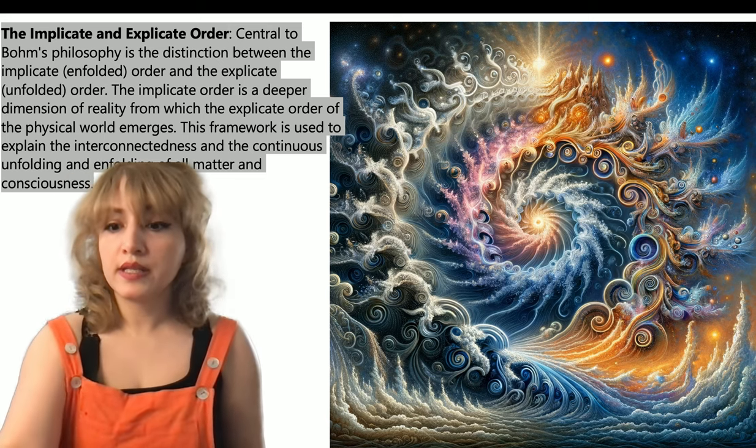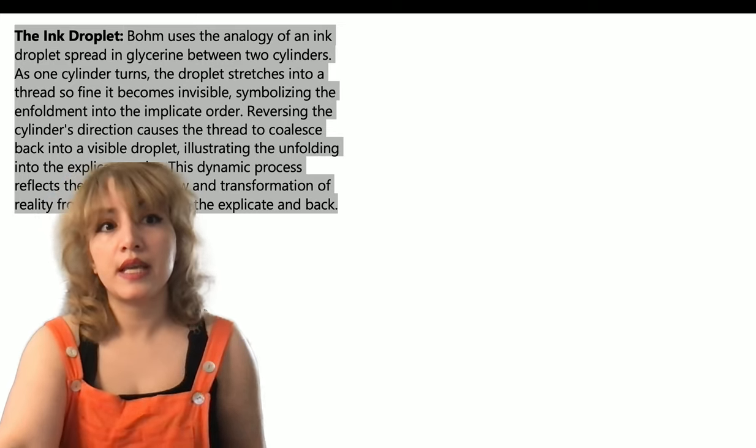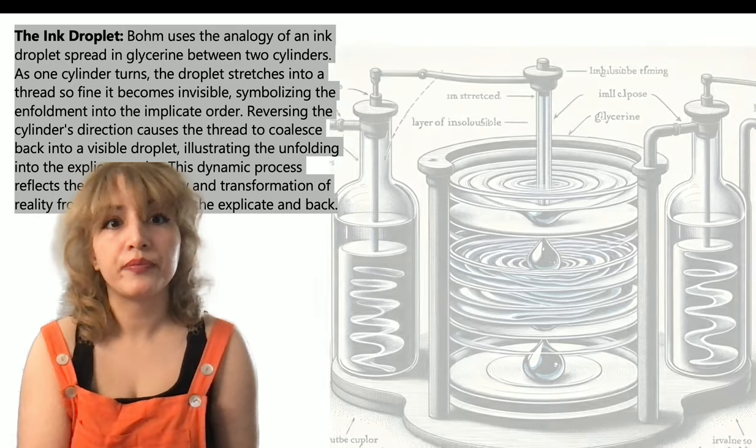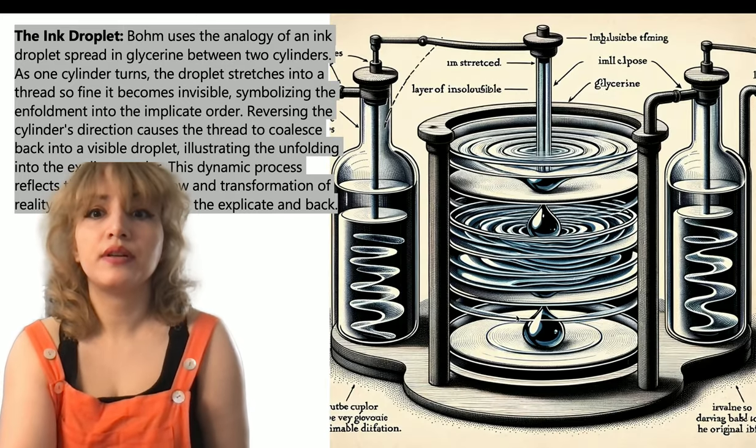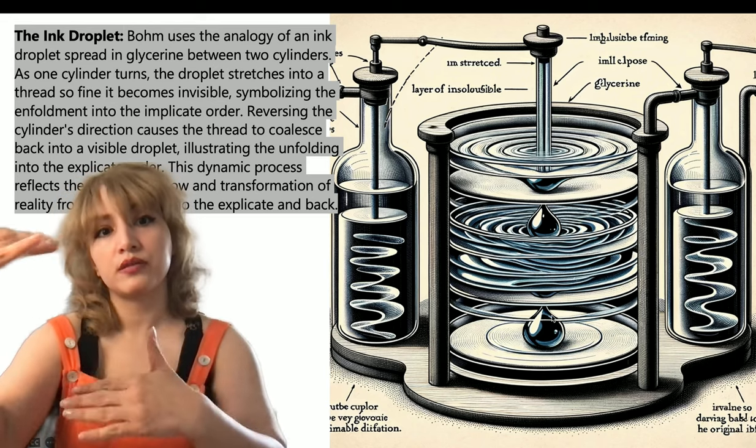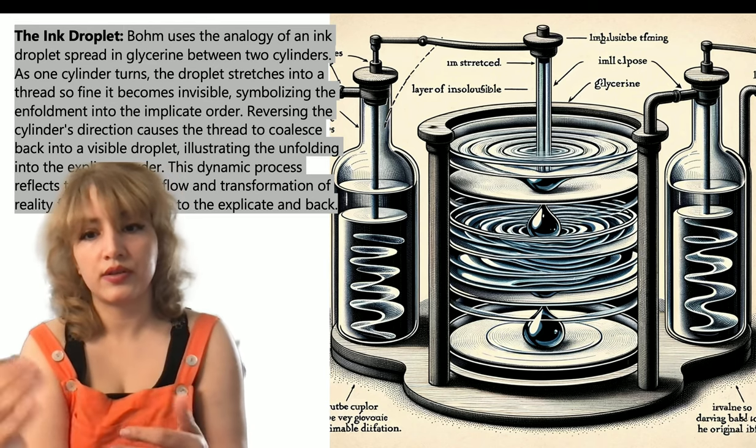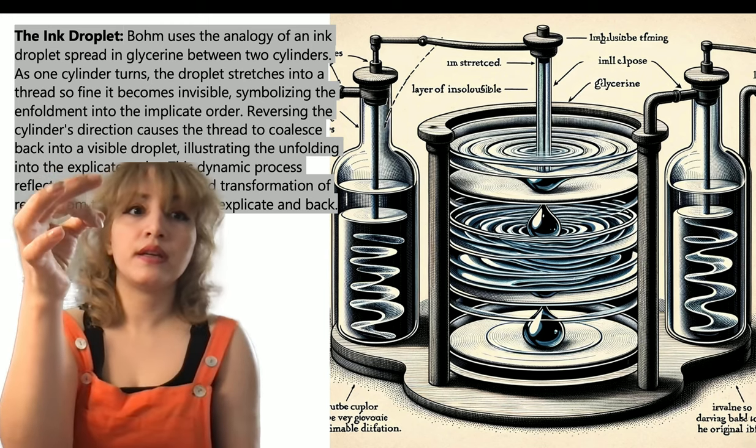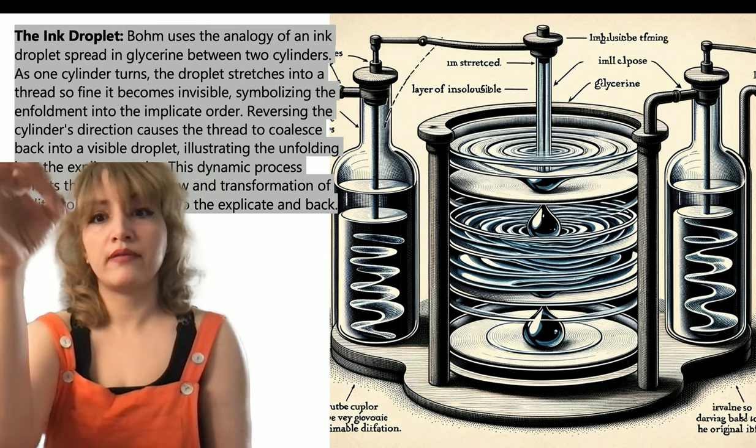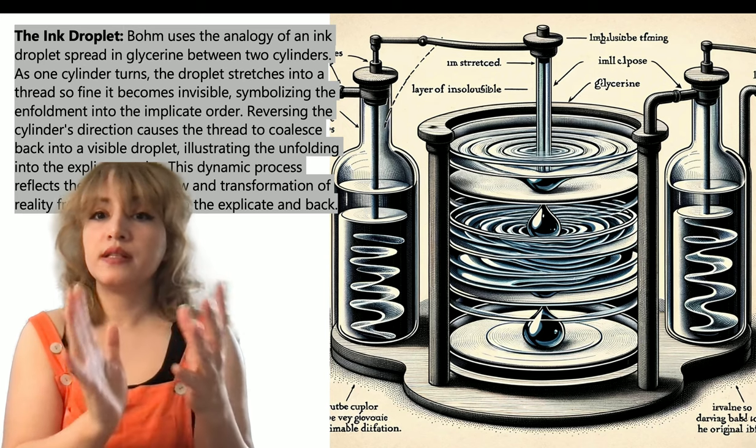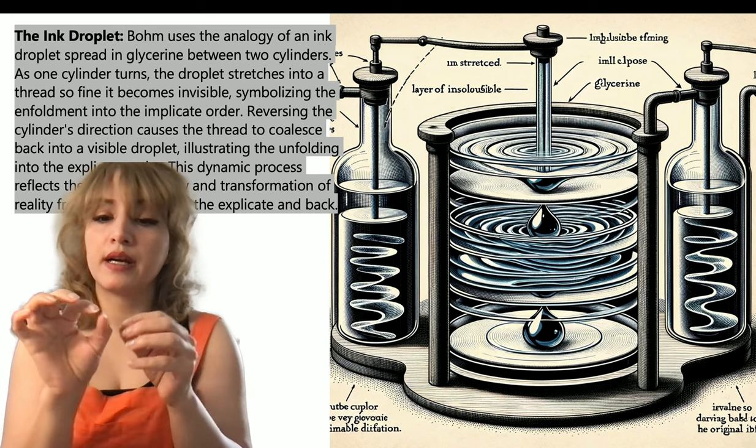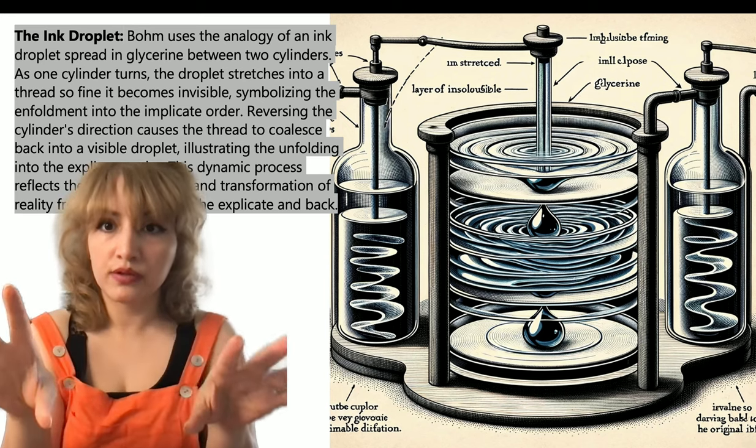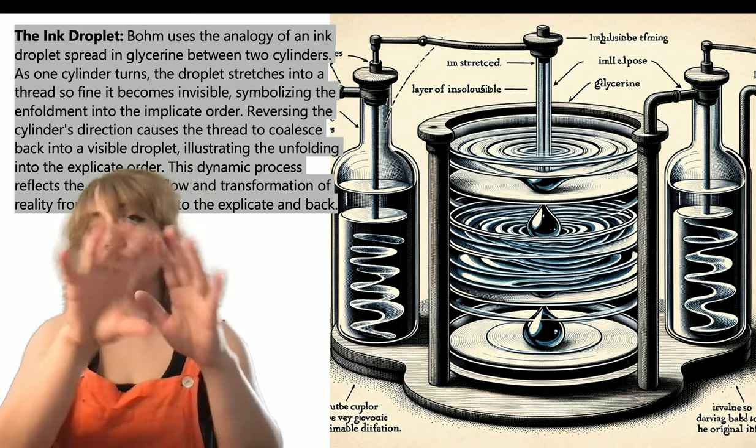An interesting analogy that Bohm uses is the ink droplet. Let's say we have a cylinder that is filled with a viscous fluid, such as glycerin, and we drop ink to that fluid. The reason it's viscous because we don't want that droplet to get diffused immediately. We want to be able to control its movement.